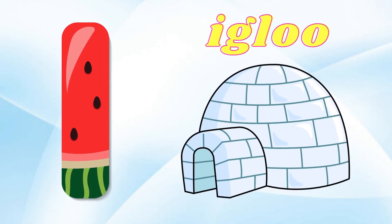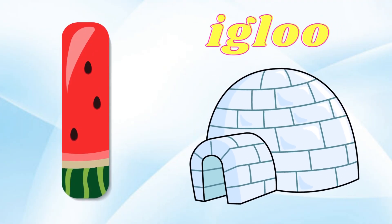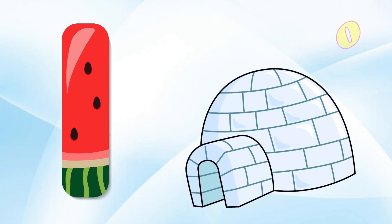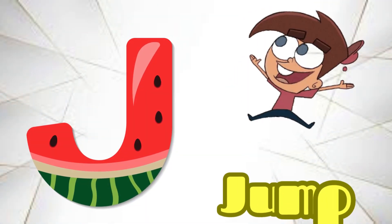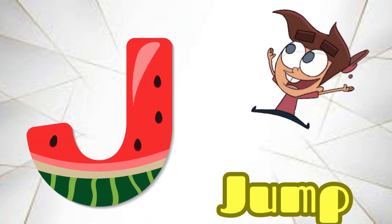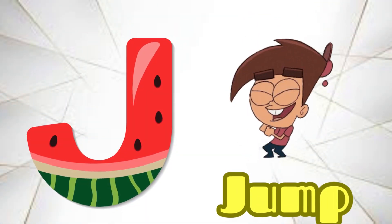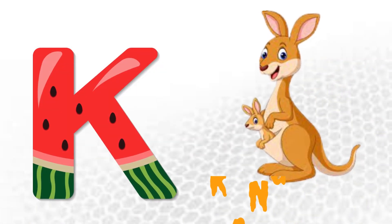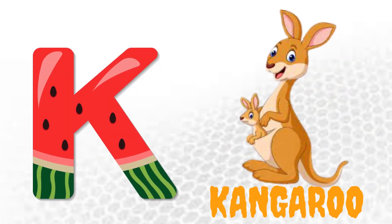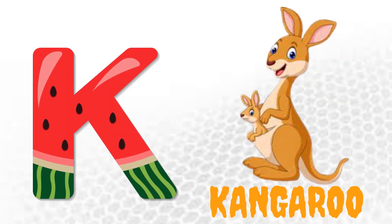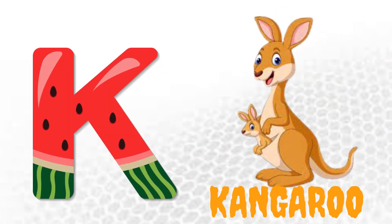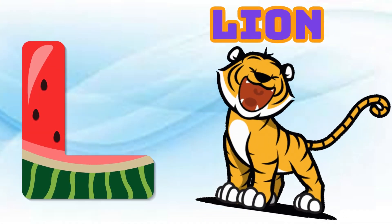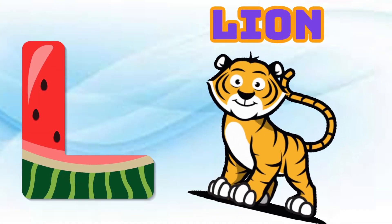I is for Igloo, I-I-Igloo. J is for Jump, J-J-Jump. K is for Kangaroo, K-K-Kangaroo.